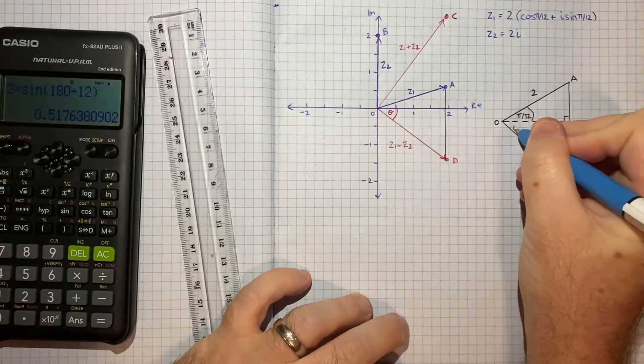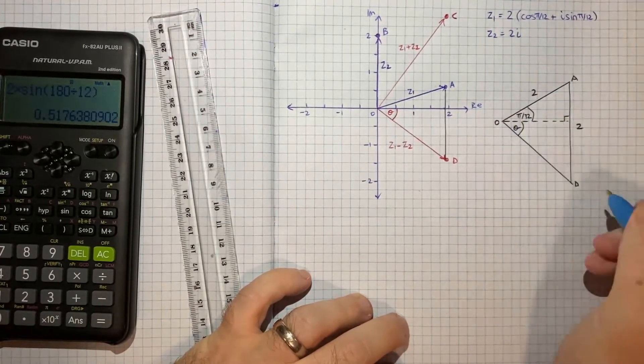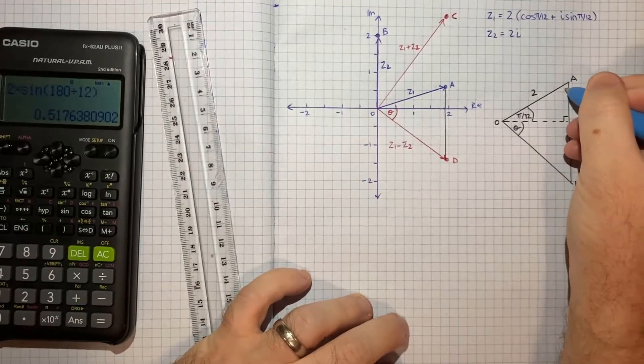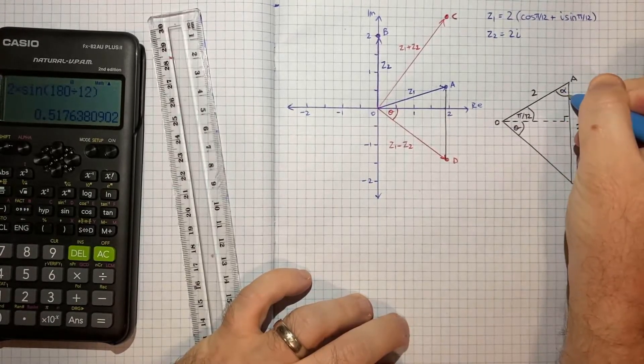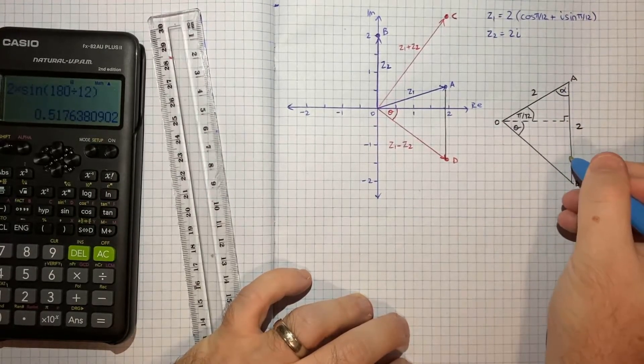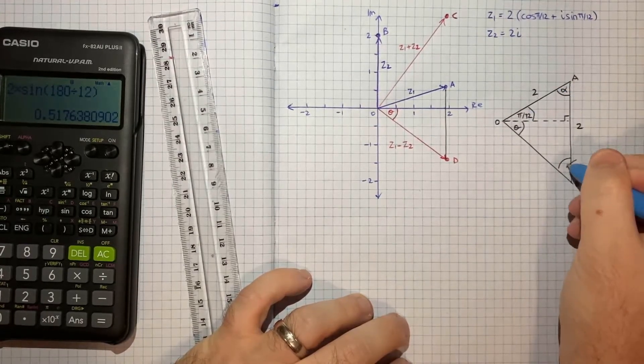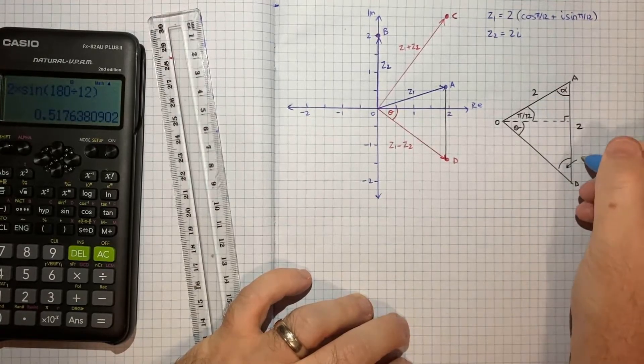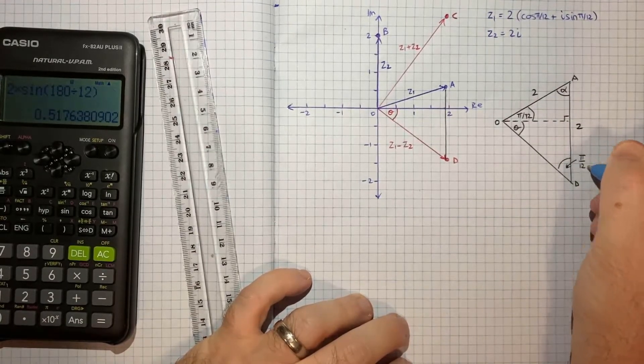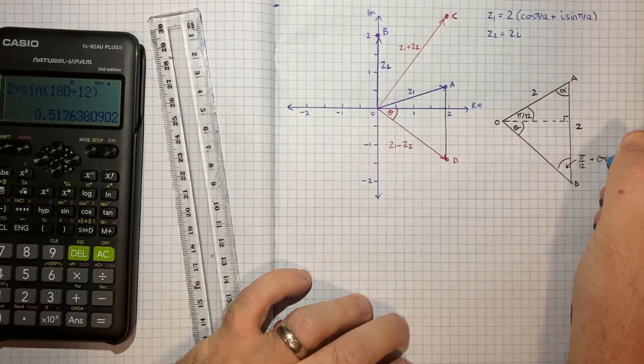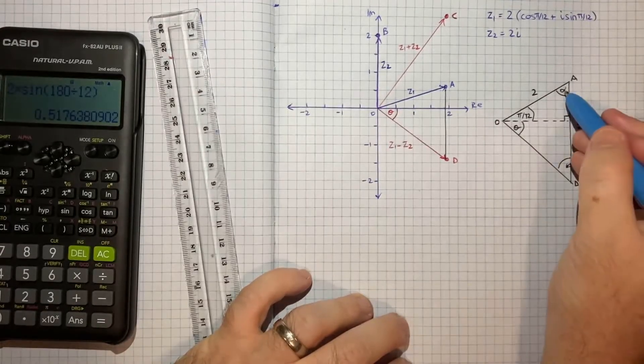we know this angle here is pi on 12. That's the argument of z1. And we've called this angle theta. Maybe I'll call this angle alpha. And we know that this angle here, because it's an isosceles triangle, this angle will also be the same as this total angle. So pi on 12 plus theta.